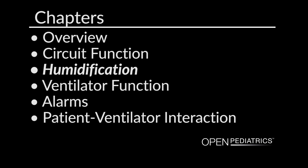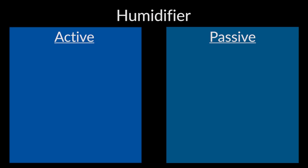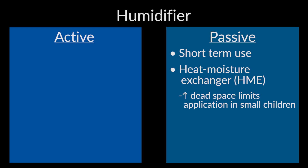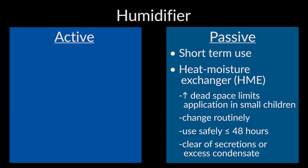Humidification: Once we have assessed that our circuit is intact and the position is appropriate, we move on to assessing our humidifier function. Humidification can be active or passive. Passive humidification is generally for short-term use and utilizes a heat-moisture exchanger, or HME. When using an HME, we must ensure that it is being changed routinely, as most can be used safely for up to 48 hours. We must also assess that the HME is clear of secretions or excess condensate that may increase resistance to patient airflow.